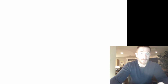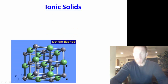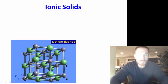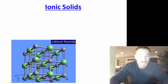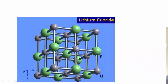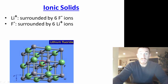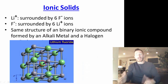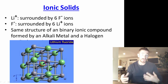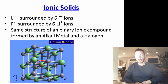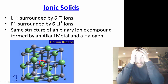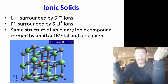That's the Born-Haber cycle. Lastly, let's look at ionic solids — specifically the crystal structure of lithium fluoride. A lithium ion is surrounded by six fluoride ions, and a fluoride ion is surrounded by six lithium ions. This is true for any binary ionic compound formed by an alkali metal and a halogen. It's a very stable, very strong structure. That's all for the Born-Haber cycle — see you in class tomorrow!